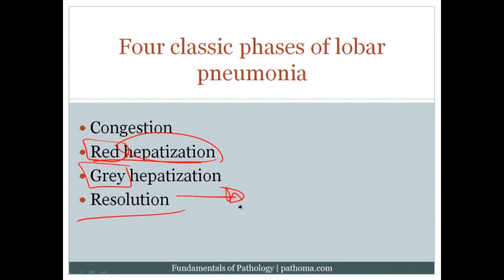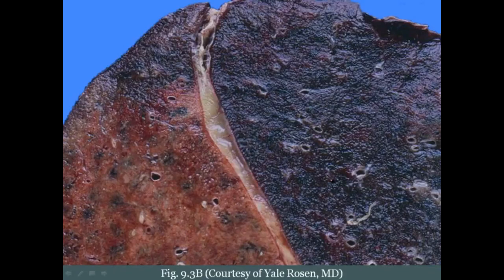After pneumonia, the lung heals by regenerating normal tissue. The type 2 pneumocyte is the stem cell of the lung that regenerates the lining of the alveolar air sacs — very high yield. On gross exam, the consolidated lobe becomes solid instead of spongy, which is where the term hepatization comes from. When full of red blood cells, this is red hepatization; once red cells are broken down, it becomes gray hepatization, and finally resolves.